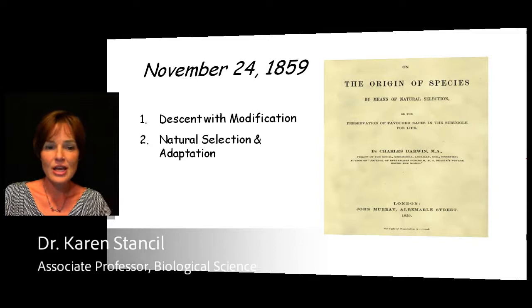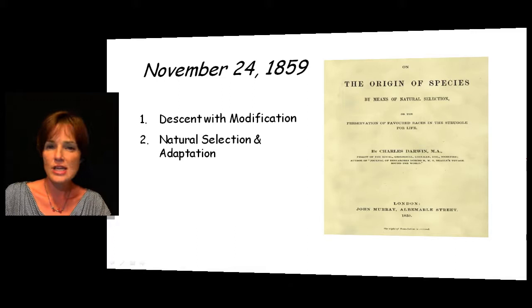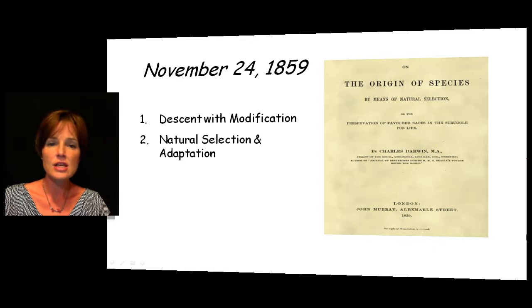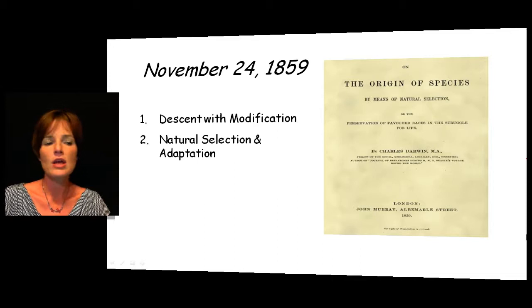As we continue our discussion of Charles Darwin and his book The Origin of the Species, we want to focus now on his second point, which was natural selection and adaptation. The first point, descent with modification, covered the idea that the species we see around us were basically descended from a common ancestor, with changes over time making many of them look very unlike each other. Natural selection and adaptation is basically the mechanism for that descent with modification.